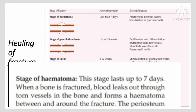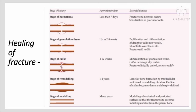The second stage is the stage of granulation tissue, which lasts for about two to three weeks. This involves proliferation and differentiation of daughter cells into vessels, fibroblasts, osteoblasts, etc. The third stage is the stage of callus, which lasts for about four to twelve weeks.